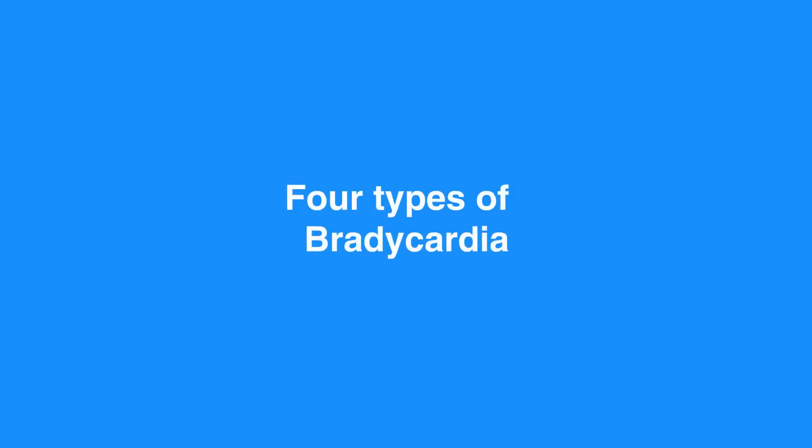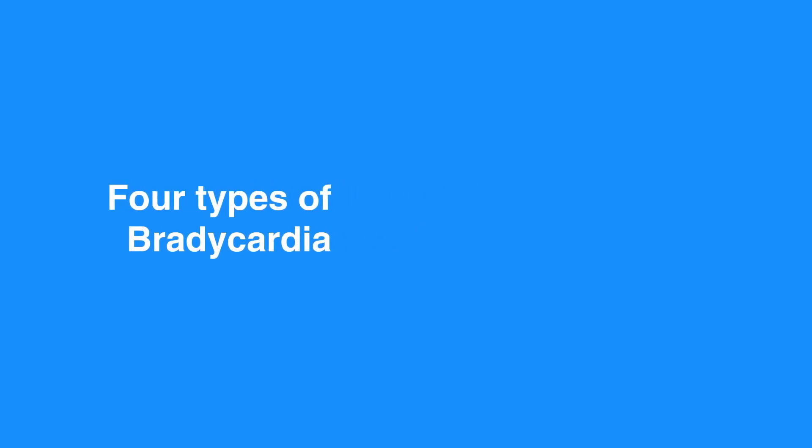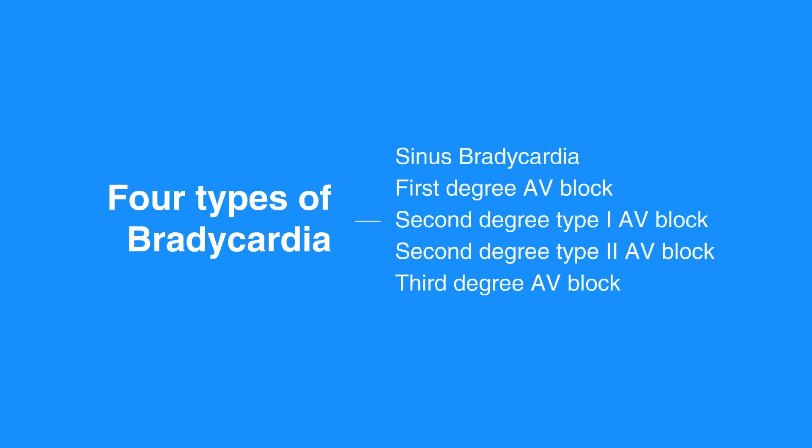We will review four types of bradycardia in this lesson, including sinus bradycardia, first degree AV block, second degree type 1 AV block (also known as Wenckebach), second degree type 2 AV block (also known as Mobitz II), and third degree AV block, also known as complete heart block.